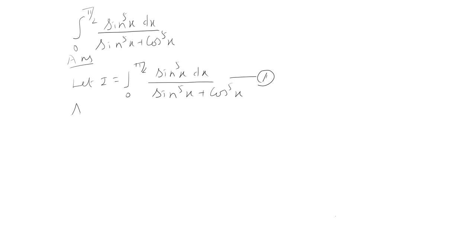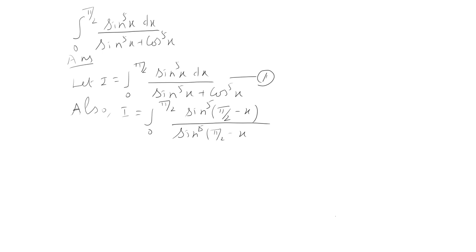Also, I is equal to — applying the rule that integral from 0 to a of f(x) dx equals integral from 0 to a of f(a minus x) dx — I is equal to integral from 0 to π/2 of sin⁵(π/2 minus x) dx divided by [sin⁵(π/2 minus x) + cos⁵(π/2 minus x)]. Here, instead of a, I have π/2.